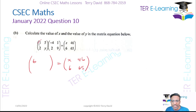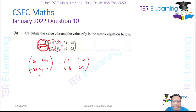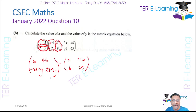Taking the second row by the first column: (2 × -4) + (2y) = -8 + 2y. Then the second row by the second column: 2 + 9y. So the resulting matrix entries are 6, 46, (-8 + 2y), and (2 + 9y).